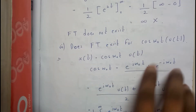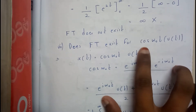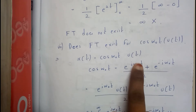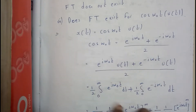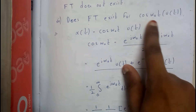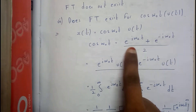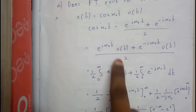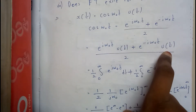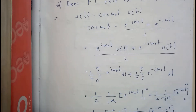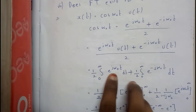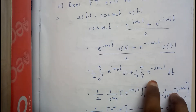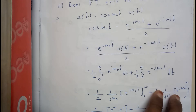Now let us go through a few more problems on Fourier transform. One of the most commonly seen problems is cos(ω₀t) u(t). Since u(t) ranges from 0 to infinity, the integral limits will be 0 to infinity. We can write cos(ω₀t) using Euler's formula as (1/2)[e^(jω₀t) + e^(-jω₀t)], giving us two separate integrals from 0 to infinity.